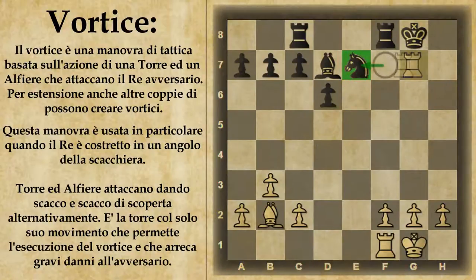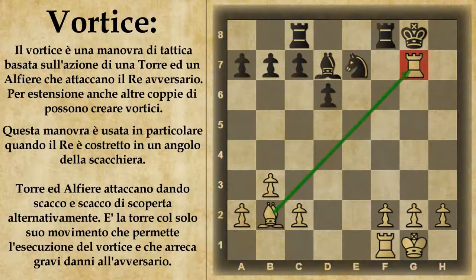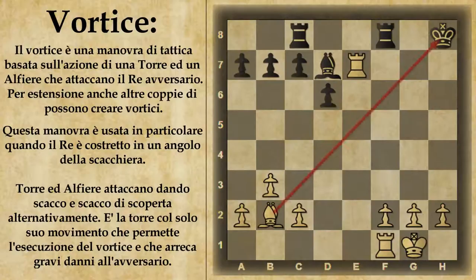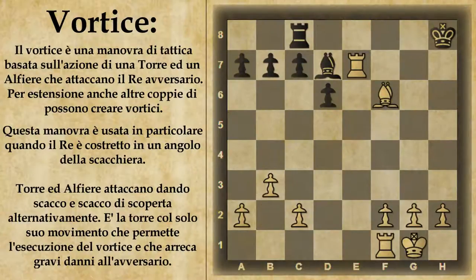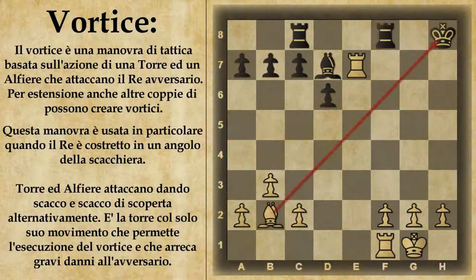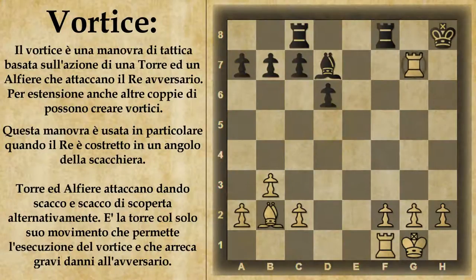Il bianco deve continuare a fare alternare gli scacchi agli scacchi di scoperta. Quindi appena dato uno scacco di scoperta, ora il turno gli dà un altro scacco. Il bianco riporta la torre in g7 e dà scacco. Qui il nero è nuovamente nella stessa condizione: non può catturare la torre e quindi dovrà spostare il re. A questo punto il bianco continua e dà un altro scacco di scoperta. Il nero effettivamente potrebbe interporre la torre, ma così facendo semplicemente il bianco la cattura.